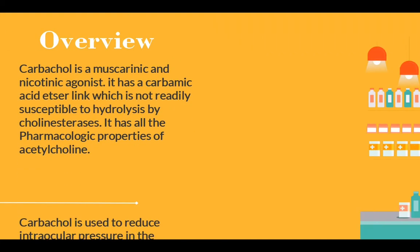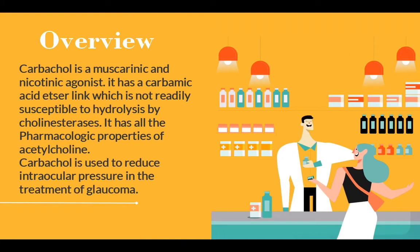Let's start with an overview. Carbachol is a muscarinic and nicotinic agonist. It has a carbamic acid ester linkage which is not readily susceptible to hydrolysis by cholinesterases. It has all the pharmacologic properties of acetylcholine. Carbachol is used to reduce intraocular pressure in the treatment of glaucoma.